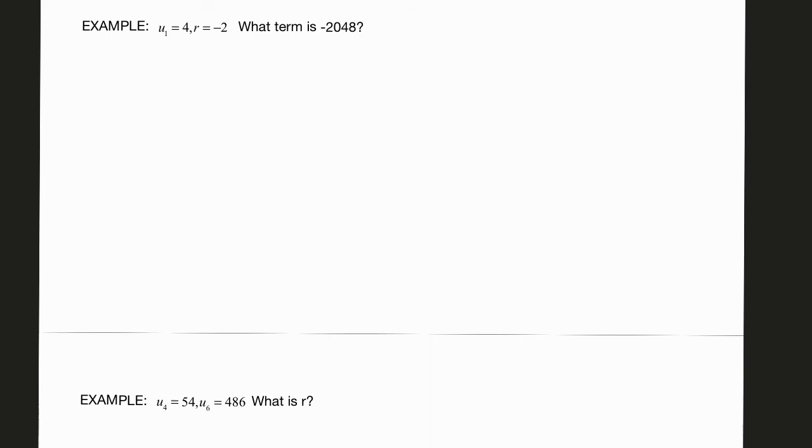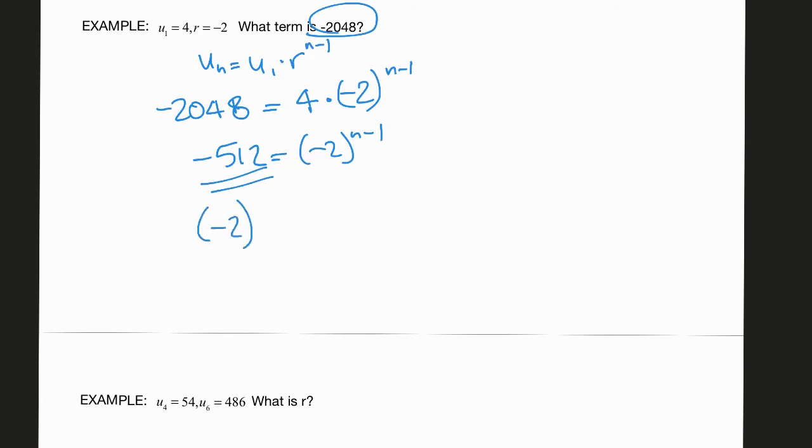Okay let's try this one. So u sub n is u sub 1 times r to the n minus 1. We're trying to figure out what n is. So here's the last term that we're trying to figure out its position. That's -2048. The first term is 4. The ratio is negative 2. Sorry about that extra line right there. Negative 2 raised to the n minus 1. If you divide those sides by 4. And then this one again this is kind of nice I can actually change this to be in base negative 2. So that means that 9 has to equal n minus 1 or in other words n equals 10.